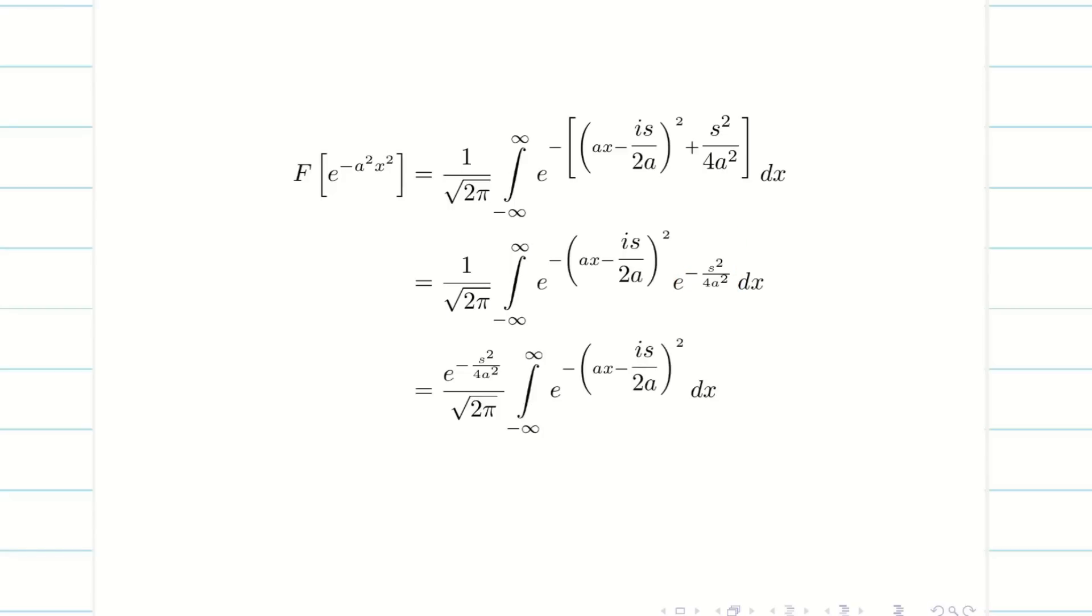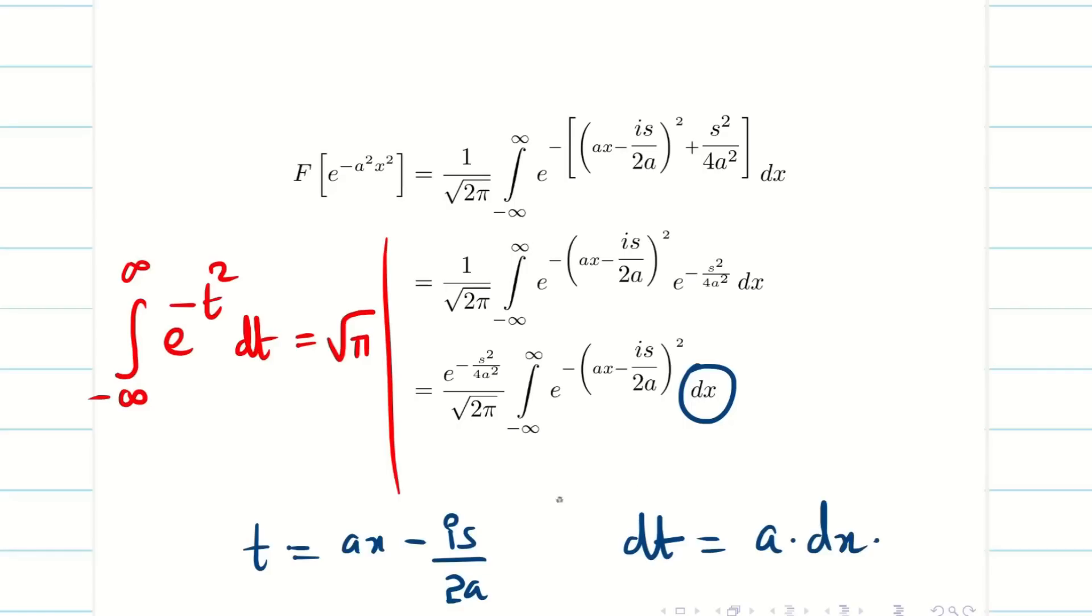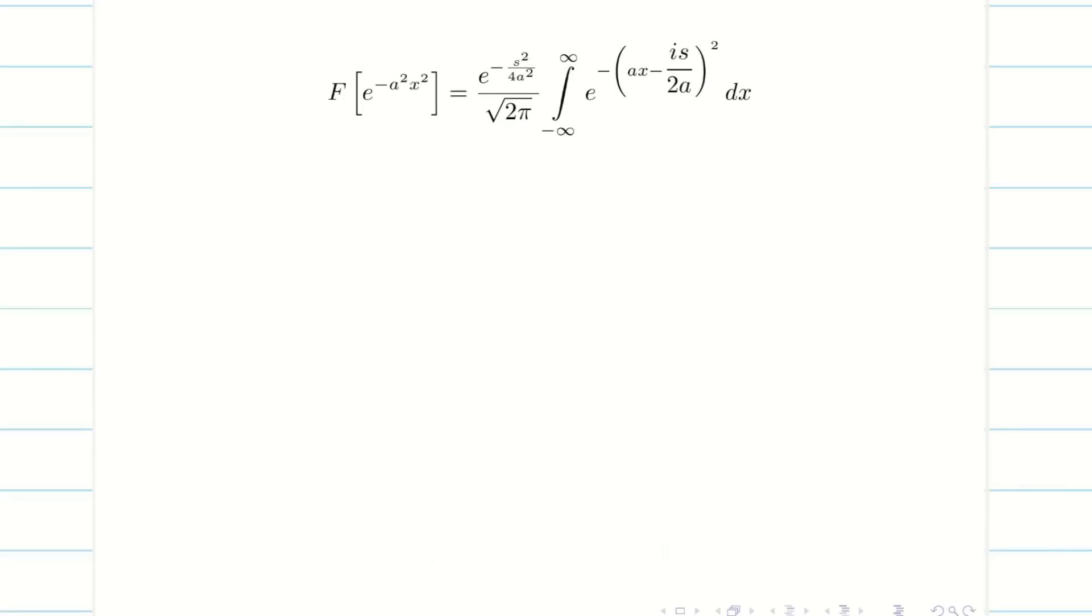Therefore it is a constant. I will take this out from the integration. Now my problem is simple. In semester 2 you learned beta gamma integration, students. We know the result: minus infinity to infinity e to the minus t squared dt is root pi. If I bring the problem like this, then I can easily solve. So I am going to take t equal to ax minus is by 2a. Then dt will become a times dx. So my dx is ready and my substitution is ready. I don't need to worry about the limits because when x is minus infinity, t is also minus infinity. When x is plus infinity, t will also be plus infinity. I need dx. I will write this as dt by a. Now let us substitute this in the formula.